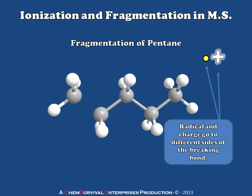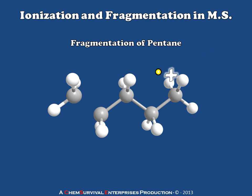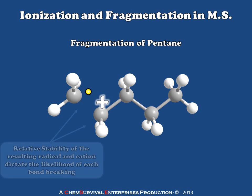In the case of a radical cation, the fragments that form are going to split the radical and the cation — they go to one or the other, but not both to the same side. In this case, the radical goes to the methyl and the cation to the butyl, though it could just as easily go the other way. It's actually the relative stability of the cations and radicals which form that allow us to determine how much of each is likely to form, and therefore how intense the signal corresponding to the mass of these fragments will be.